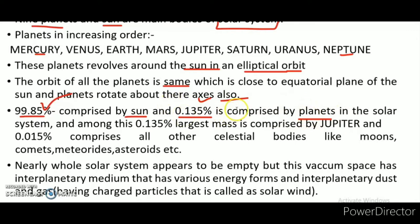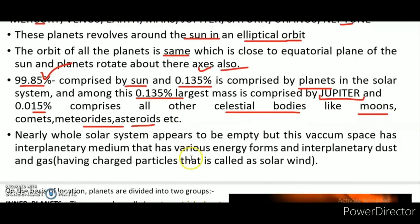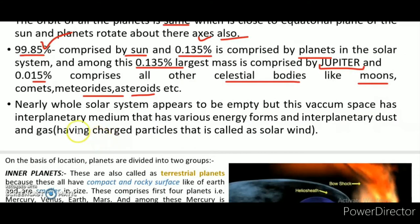Among the planets, Jupiter covers the largest percentage. About 0.015% comprises all other celestial bodies like moons, comets, meteorites, asteroids, and other bodies. Nearly the whole solar system appears to be empty space — a lot of vacuum space.